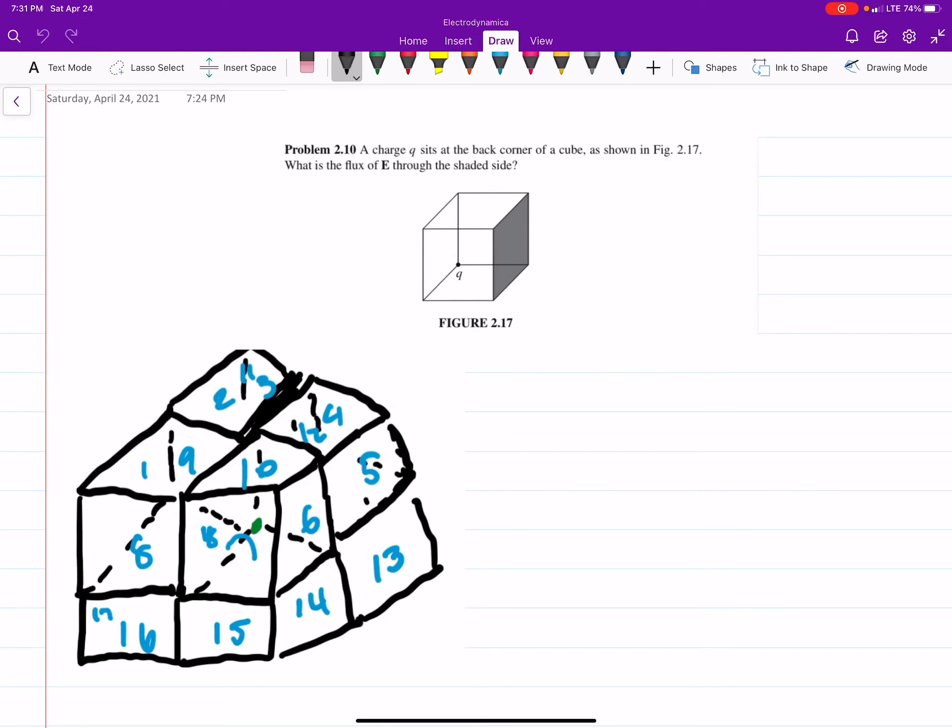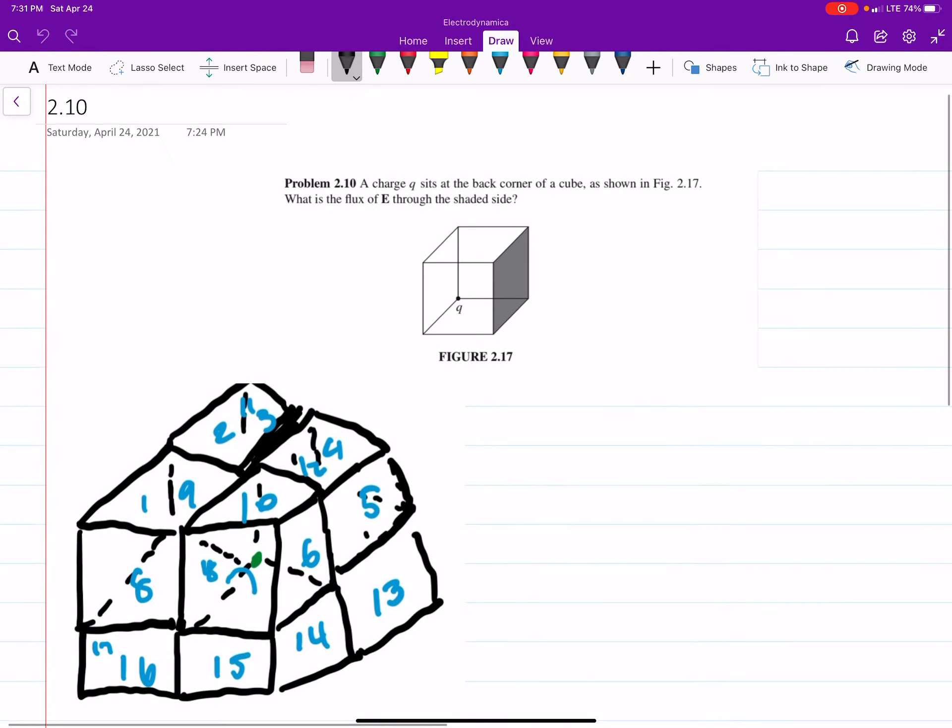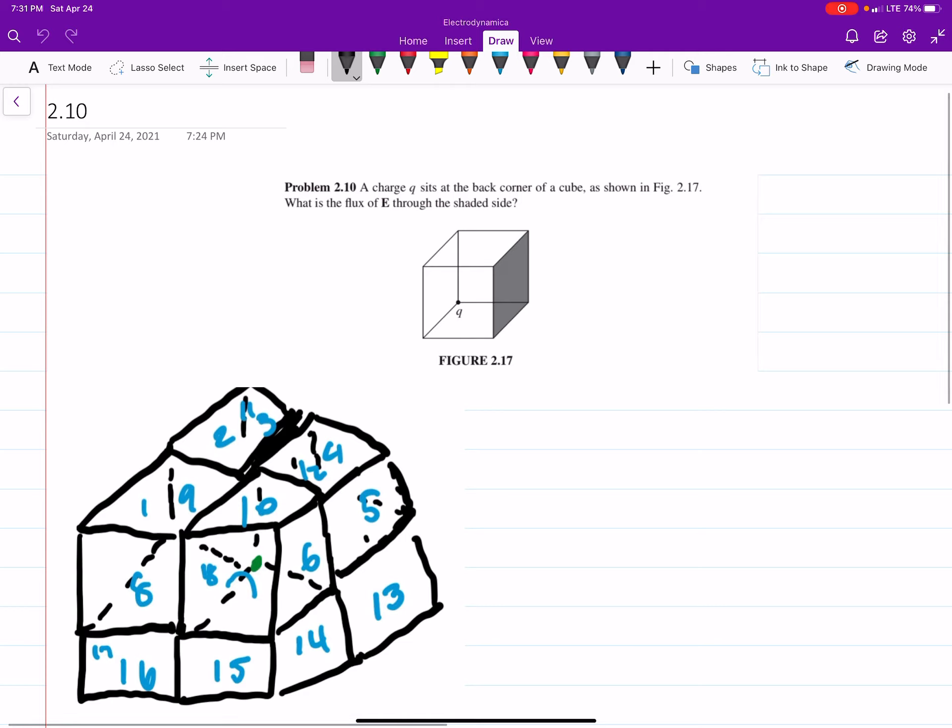Okay, so this is problem 2.10 out of Griffiths, and I had to grab my drawing. It took a little while to get, but basically we have a charge Q sitting in the back here, and we want to know the flux going through that side of the cube.